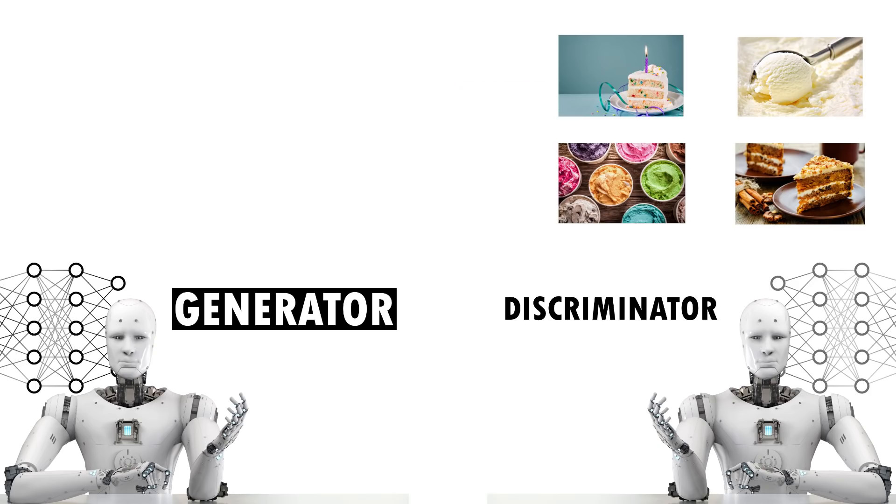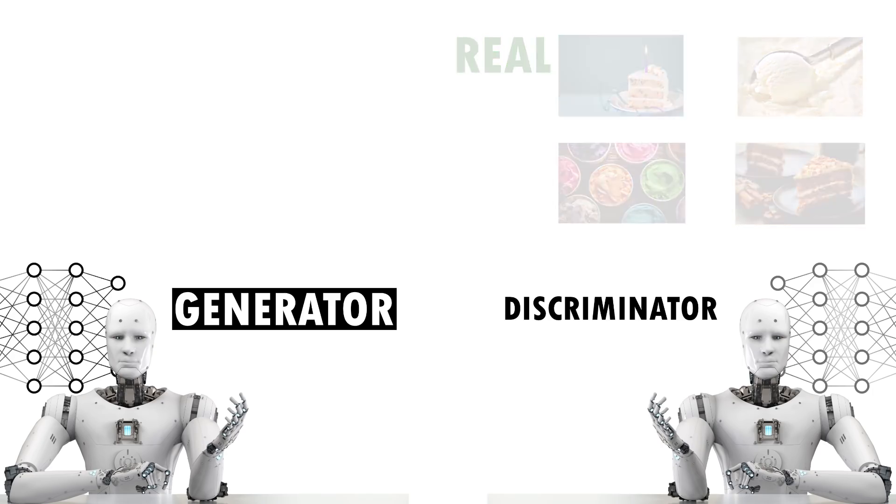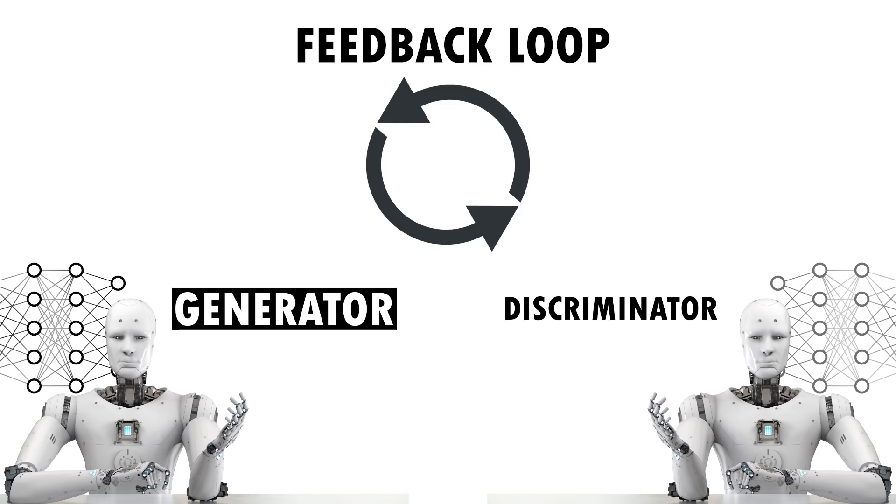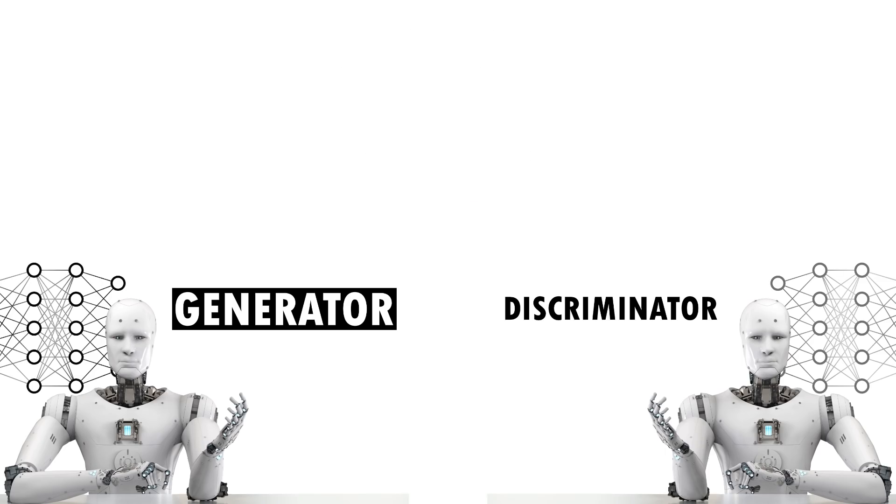Likewise, when the discriminator incorrectly identifies a fake image as real, it learns from its failure and becomes more accurate at authenticating images. This process creates a rapid feedback loop until the two networks reach a point of equilibrium, successfully completing the training phase.